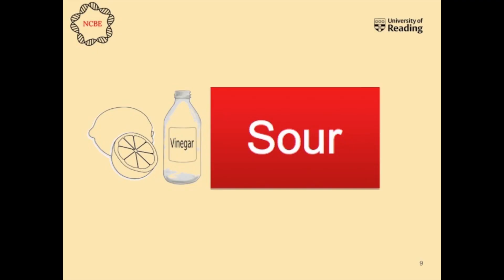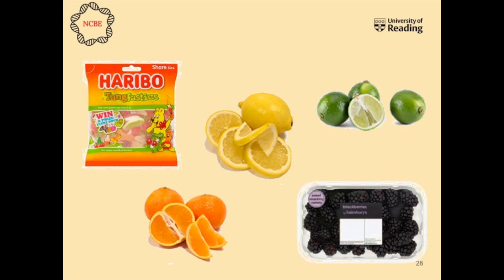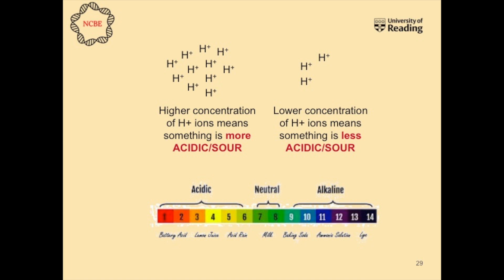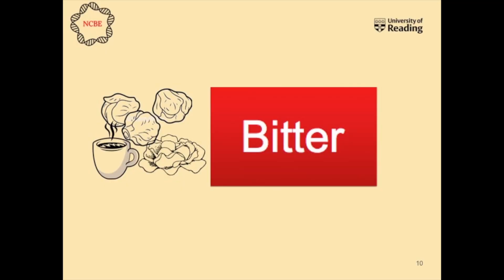So we're now going to move on to sour, such as the lemon I showed you. We've also got things like Haribo Tangfastics, lemons, limes, other citrus fruits like oranges, and sour fruits like blackberry. This is your taste receptors responding to acidity, or what we call hydrogen ions. The more acidic something is, the lower its pH — something really acidic generally has a pH of less than four and a high concentration of hydrogen ions. This acidity can either be naturally present in foods, like in a lemon, or added to foods, like sour sweets or sparkling drinks that have that sour note.